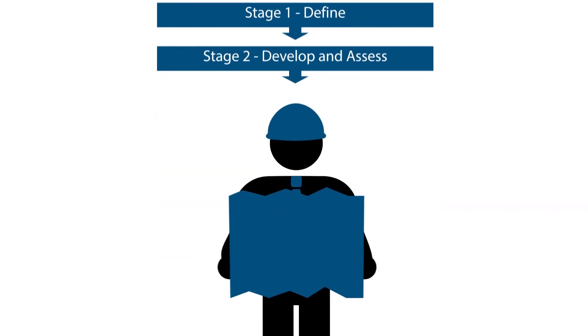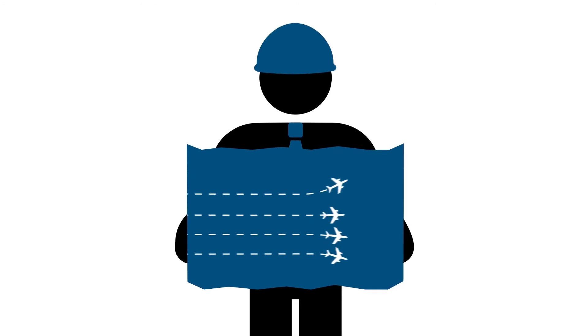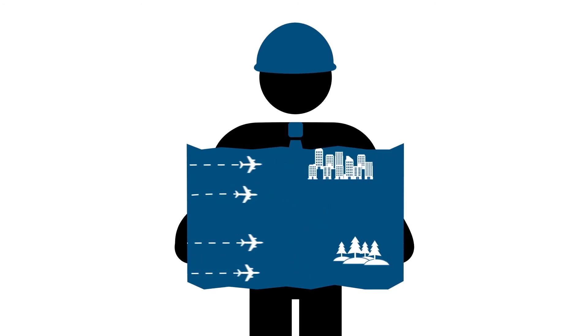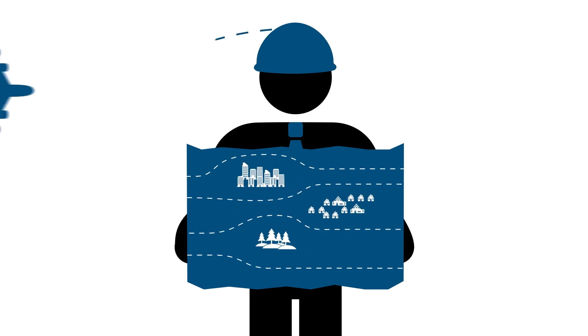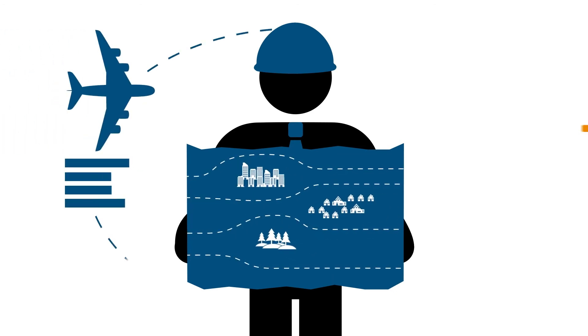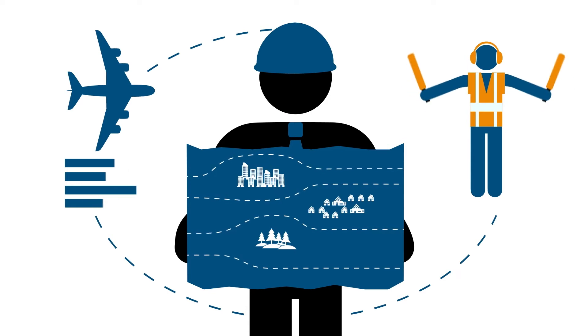In Stage 2, our route designers will firstly identify areas where it would be possible to design routes and areas where it would not. In doing this, they take account of aircraft performance and the international procedures that apply to aircraft landings and take-offs.